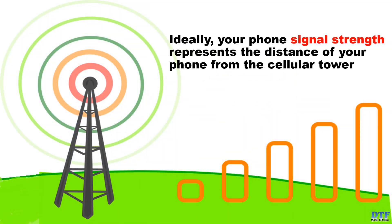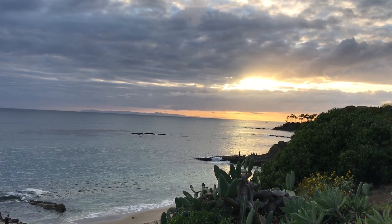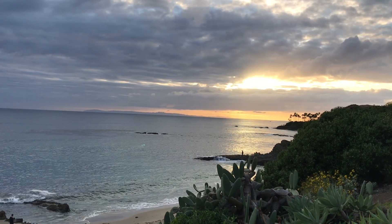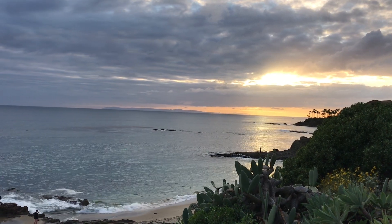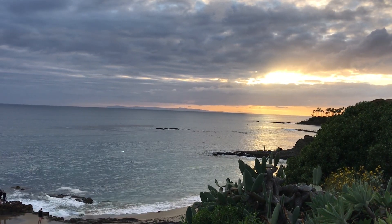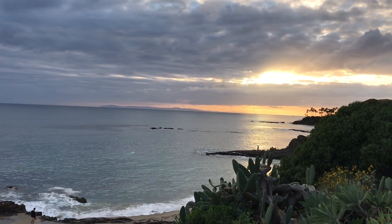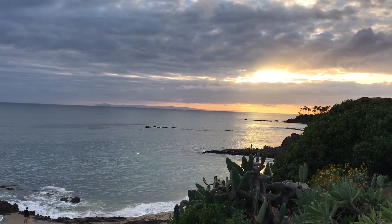Ideally, your phone's signal strength shows the distance of your phone from the cellular tower. Most of the time, the network signal indicator bar on a mobile phone is different when compared to the real or true signal strength.